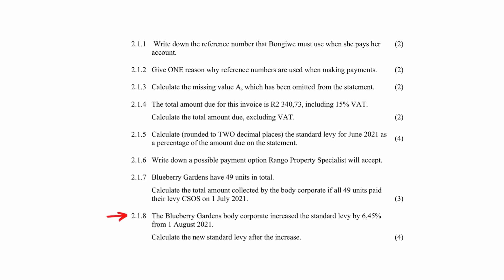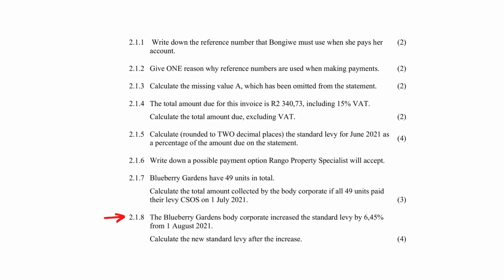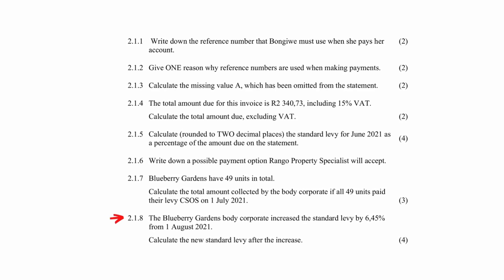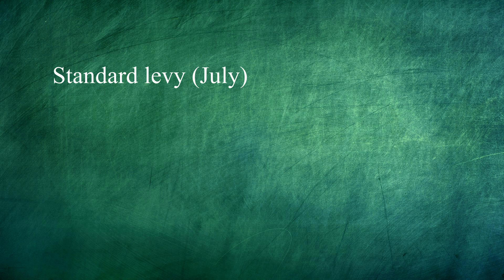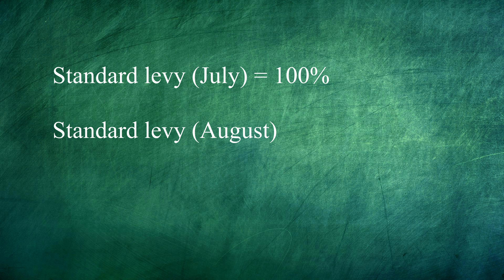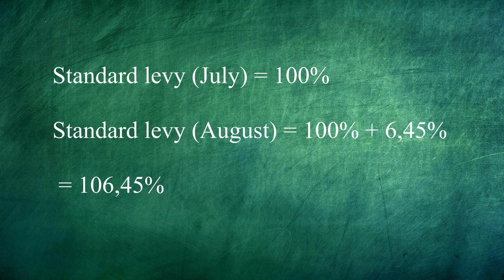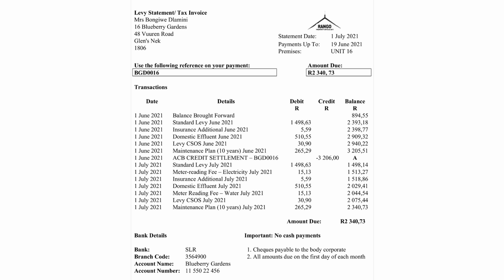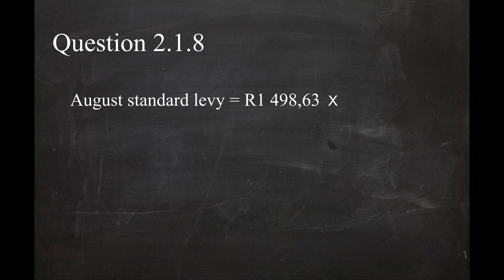In Question 2.1.8, you have to calculate the new standard levy after an increase of 6.45% from the first of August 2021. If the standard levy in July is considered 100%, then the new levy in August will equal 100% plus the 6.45% increase, giving 106.45% of the July levy. So the new levy in August is R1498.63 multiplied by 106.45% divided by 100%, giving a new levy of R1595.29.